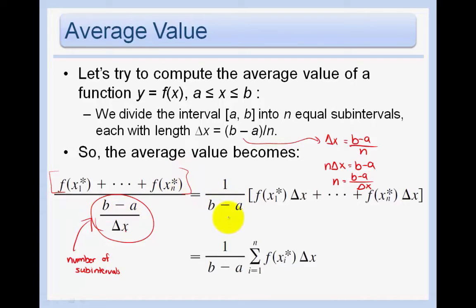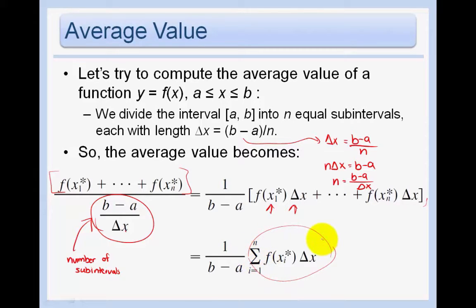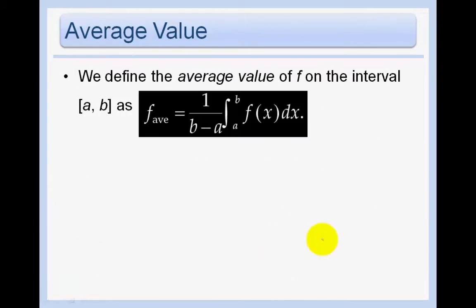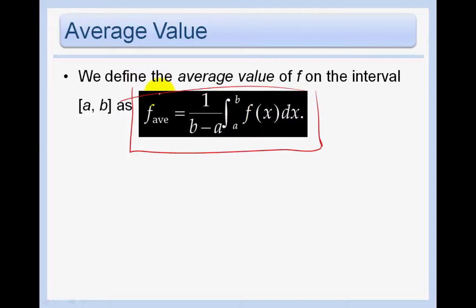We just factored the b minus a out and we get f of x₁* times delta x, plus add them all up. What do you notice here? We're just summing up all of the height times the width — that is just our summation that we've seen a lot of times. In other words, the area under our curve. So we can say that the average value of a function on the interval a to b is just 1 over b minus a times the integral from a to b of f of x dx. And so this is our average value of a function.